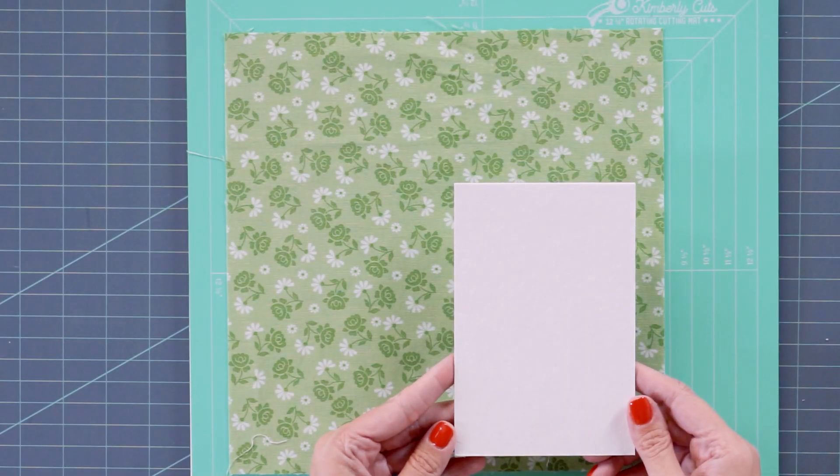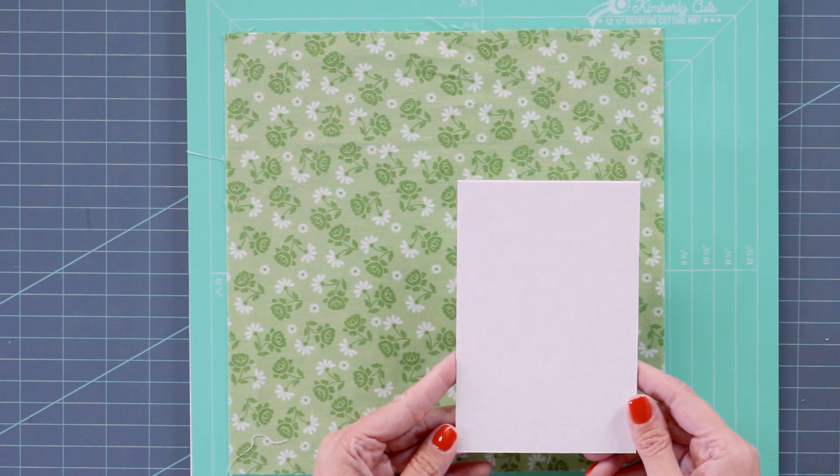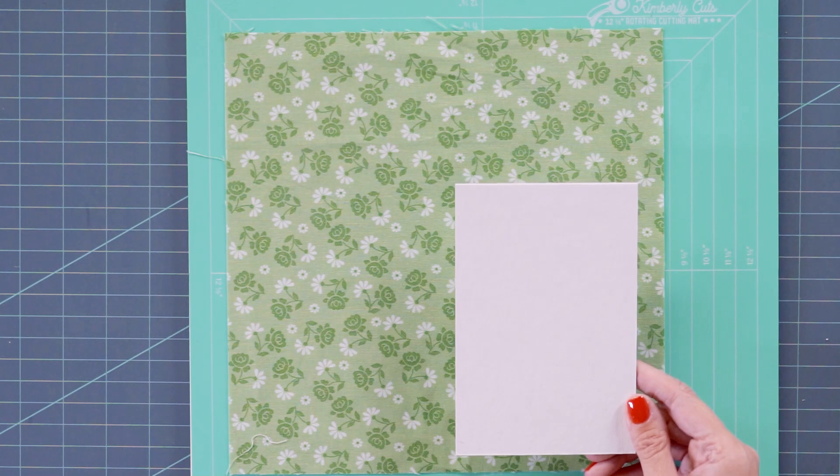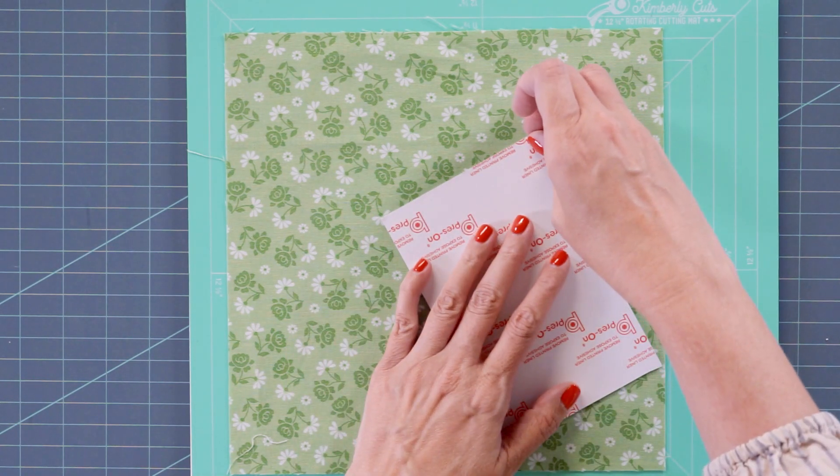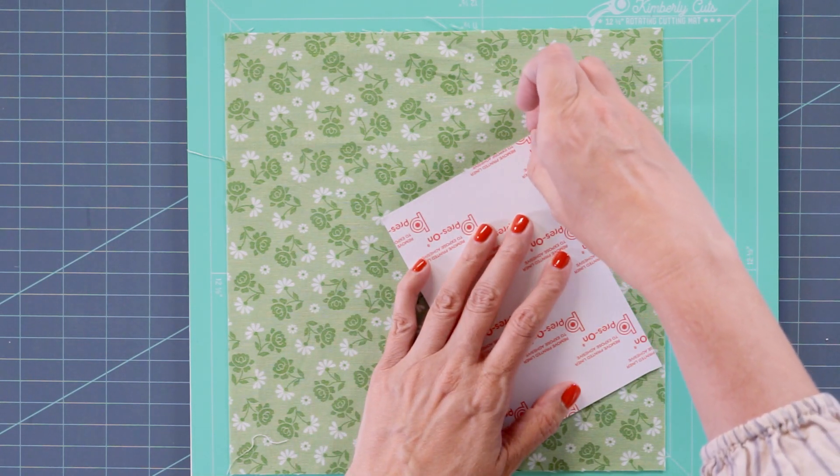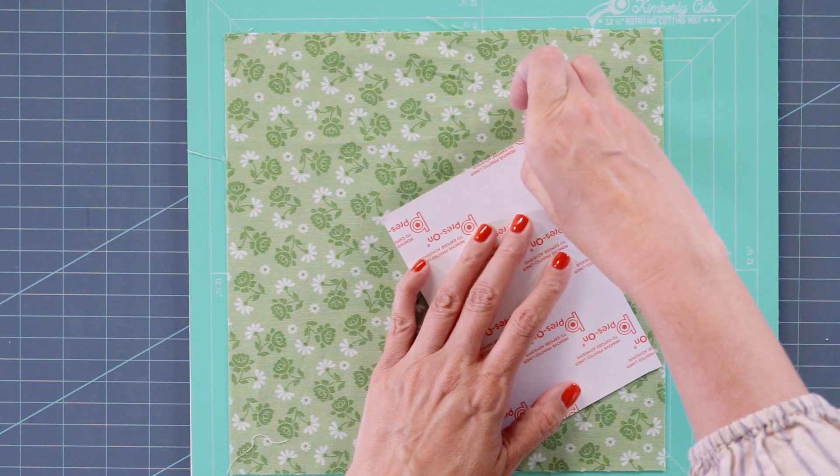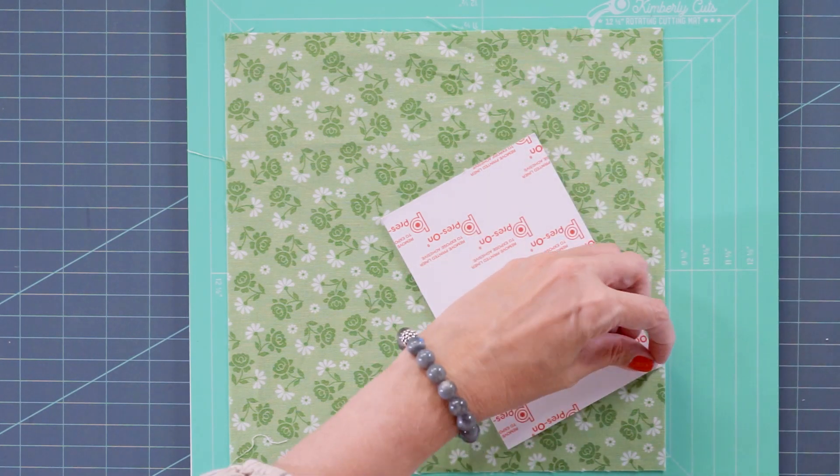The frame that we bought is used to hold four by six photos. So we decided to use a sticky board and cut it down to four by six. On this one, we're not going to add batting. We're just going to do fabric with no batting in between.